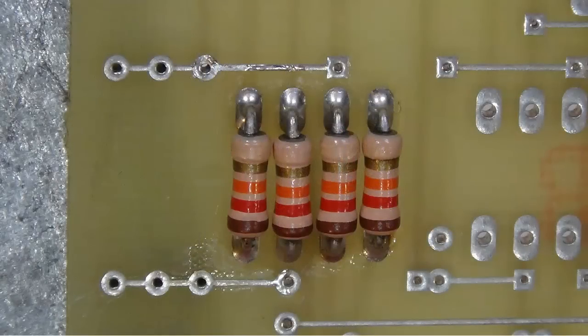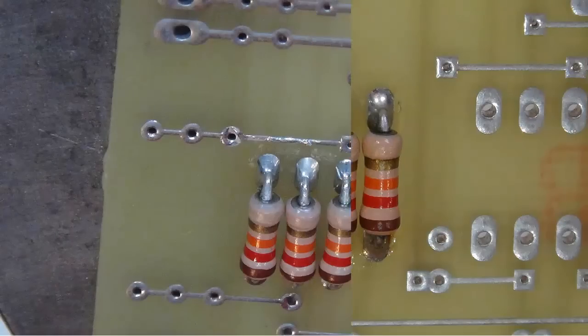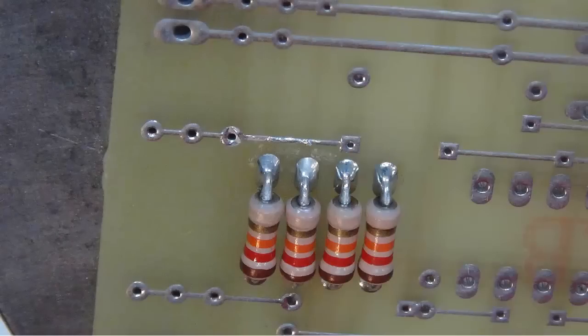This is a close up view of the soldering on the component side. All the solder joints should look the same. Keep in mind I did not do any soldering on the component side of the circuit board. I did all my soldering on the other side of the circuit board and the solder flowed through to this side via the plated through holes.